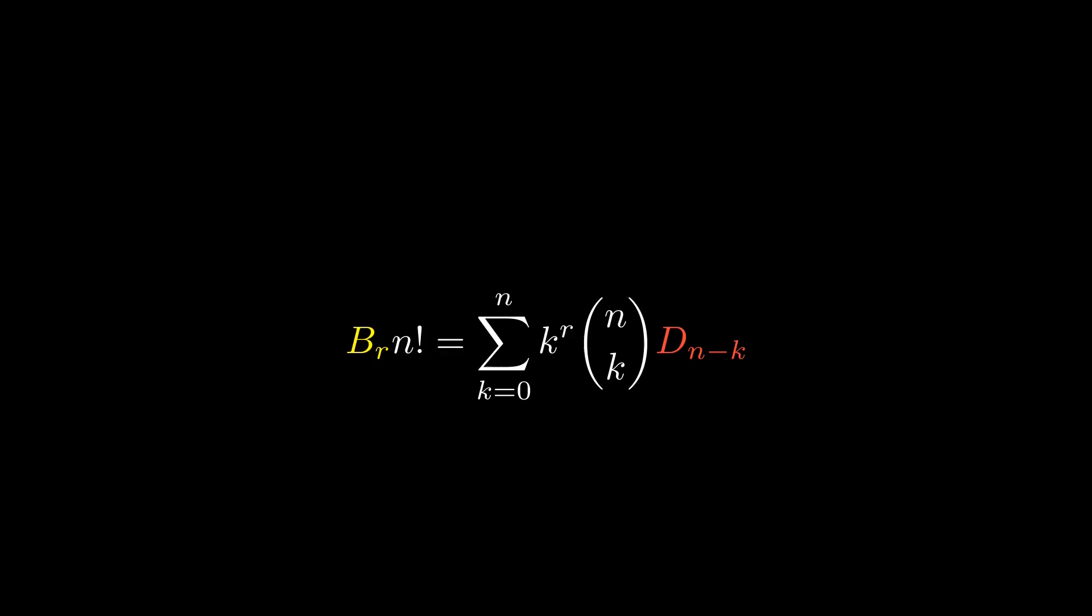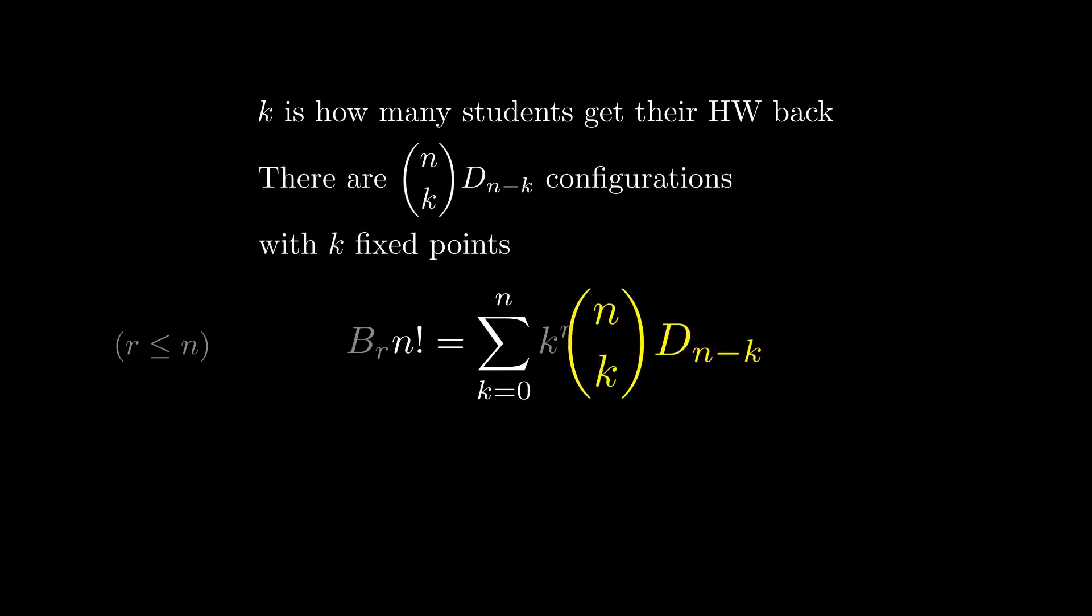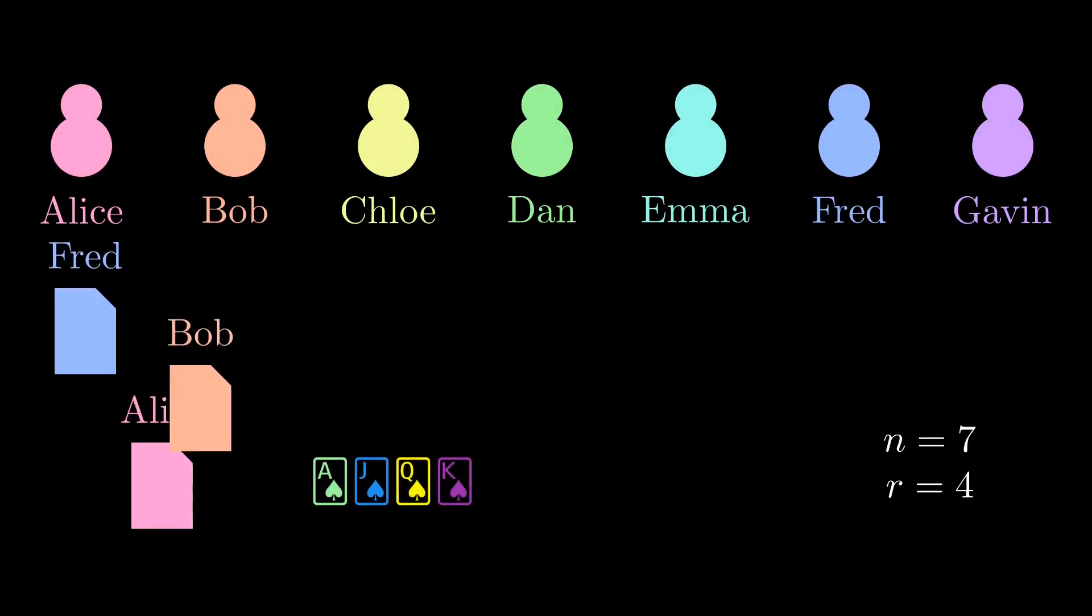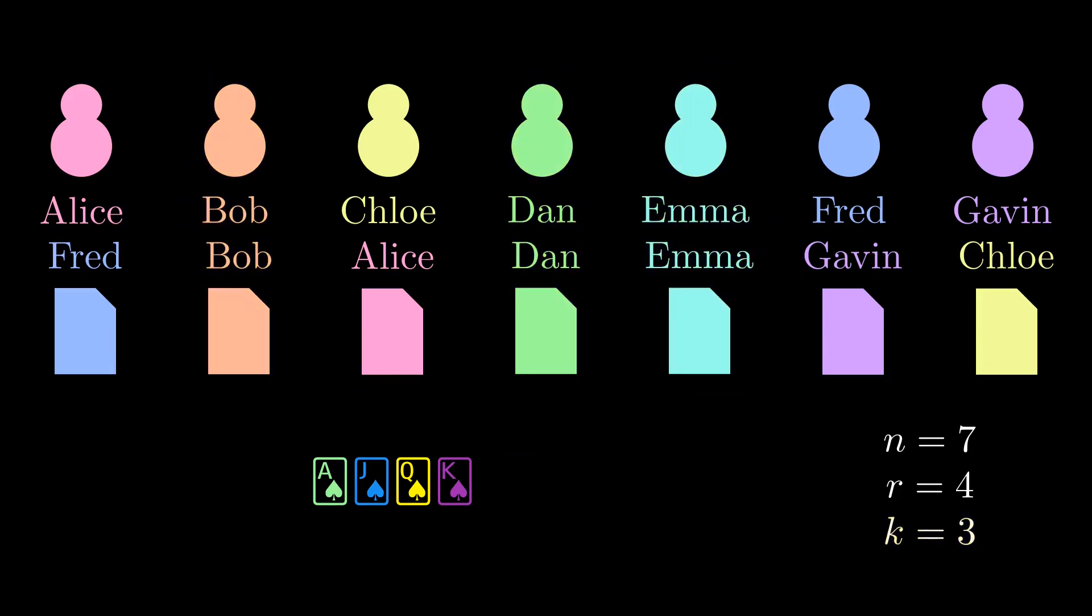We have our n students and we hand back their homework, paying attention to how many got their own homework back. For any numbers 0 to all n of the students, let's say k get their homework back. Choose those k and derange the rest. That counts all n factorial ways to hand back the homeworks. But now we have to interpret that k to the r term. The b sub r on the other side of the equation gives us our best first guess. Let's say we have r prizes. Then k to the r can count how many ways we hand out prizes to the kids who got their own homework back. Do you see why? For each prize, there are k possible students to give it to. So that's k choices for prize number 1 times k choices for prize number 2 and so on.